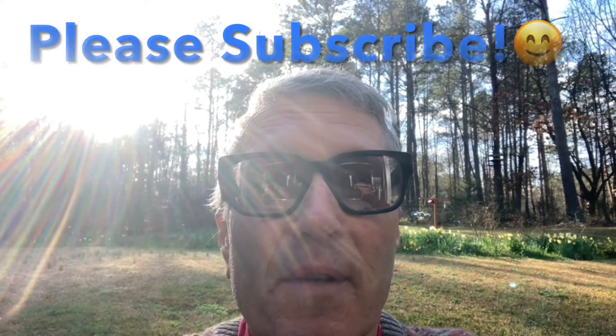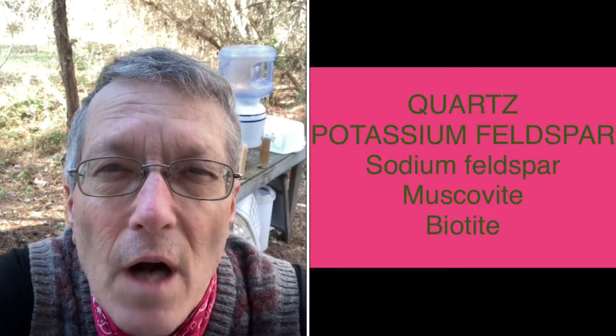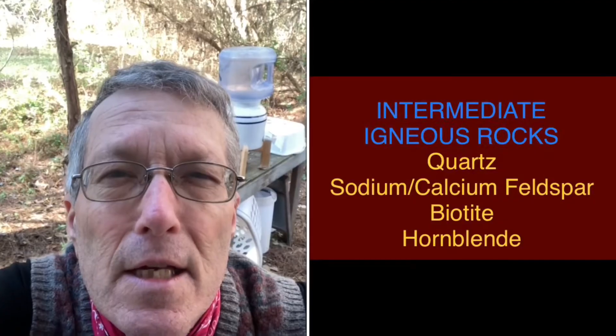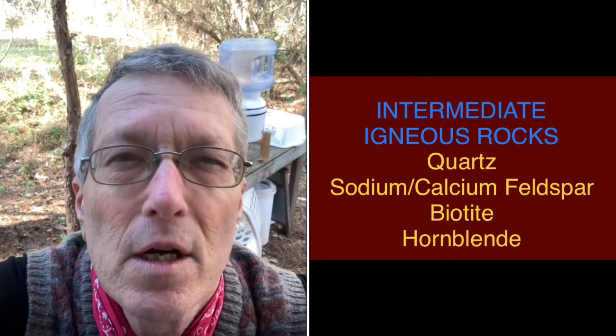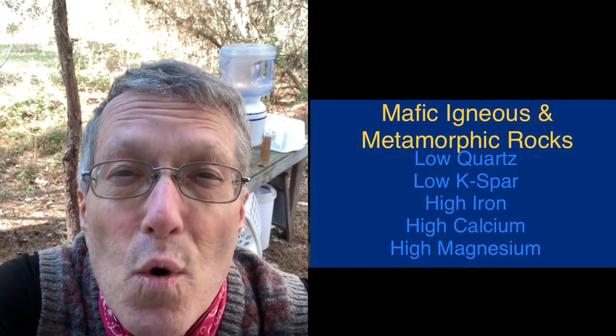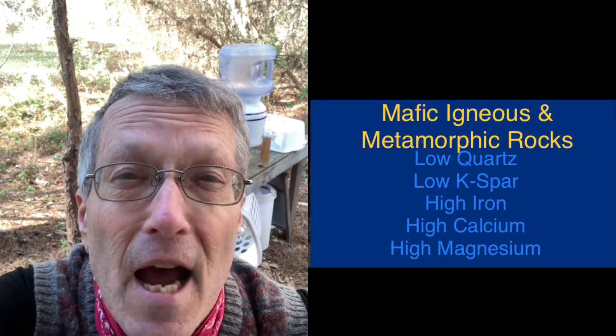In the video on felsic igneous and metamorphic rocks, we learned that felsic rocks are rocks that are high in quartz and potassium felspar and low in iron and magnesium. In the video on intermediate igneous and metamorphic rocks, we learned that intermediate rocks have medium amounts of quartz and felspar and medium amounts of iron and magnesium, but not a superabundance of each. Now mafic igneous and metamorphic rocks are low in quartz and potassium felspar, high in calcium felspar, high in iron, and high in magnesium. I think I'm getting a little confusing about felsic, intermediate, and mafic elements versus felsic, intermediate, and mafic minerals, so let me clarify a little bit.